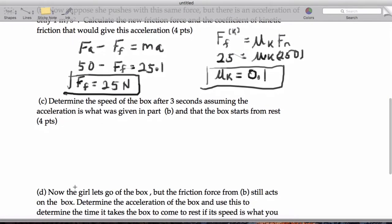Now, it says, determine the speed of the box after 3 seconds, assuming the acceleration is what was given in part B, and the box starts from rest. Now, since we have an acceleration, we're going to use the equation V equals AT plus U. So, the acceleration was 1 meters per second squared. The time is 3 seconds, and we start from rest. So, we're getting 3 meters per second.